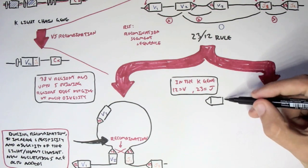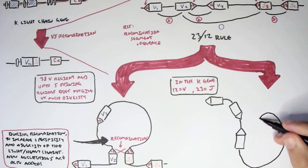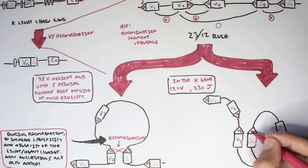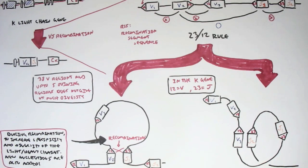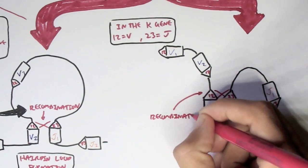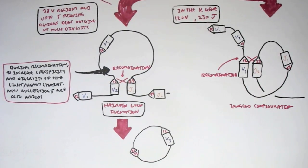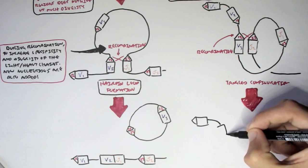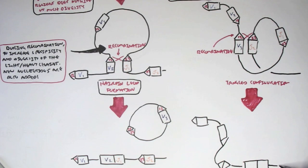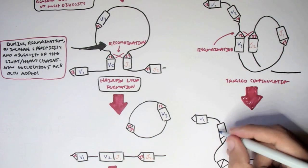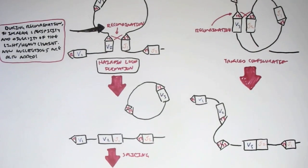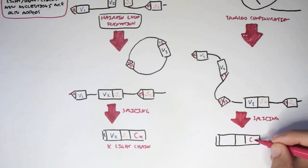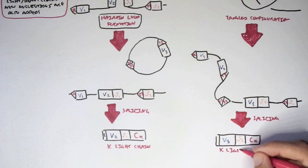There is another way recombination can occur using the 23-12 rule. In this tangled configuration (as opposed to the hairpin loop), variable segment 3 and joining segment 2 are aligned with the 12 bp spacer of V3 and the 23 bp spacer of J2 adjacent to each other. Through recombination, V3 and J2 bind together, forming DNA, then RNA, which is spliced to produce V3-J2 with the constant region — another type of kappa light chain.